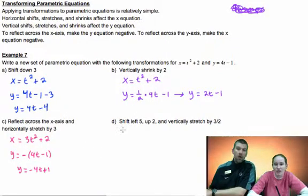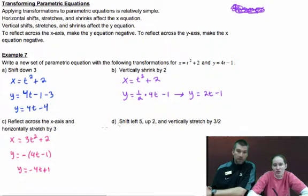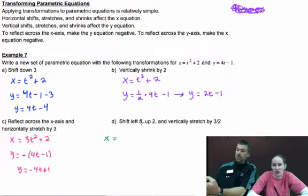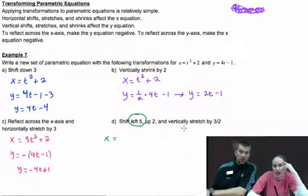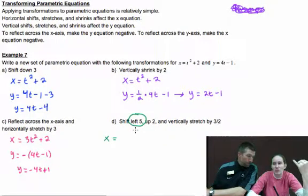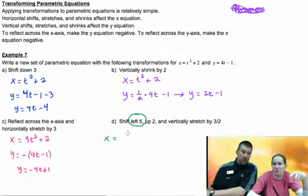So here, let's do a whole bunch of stuff. There's like three things there. We're going to shift left five, up two, and vertically stretched by three halves. What's affecting our X equation is the left five, anything left or right, and that's it. These other two are the y.